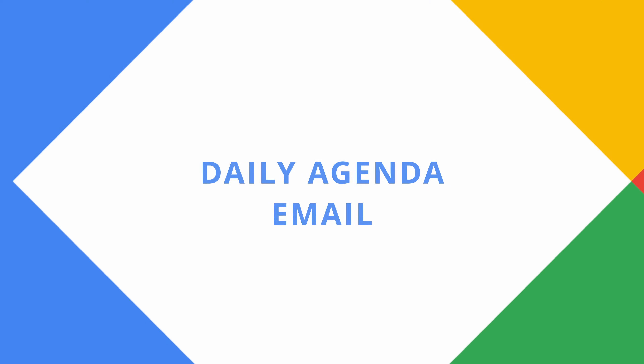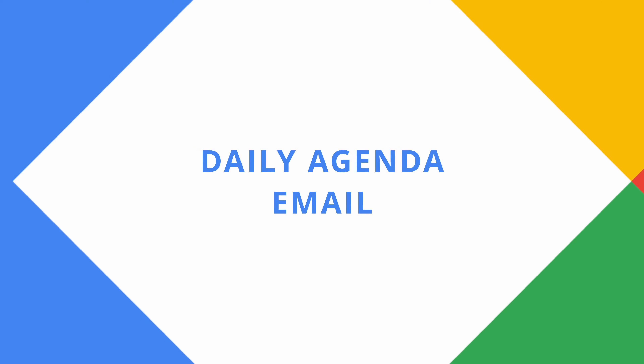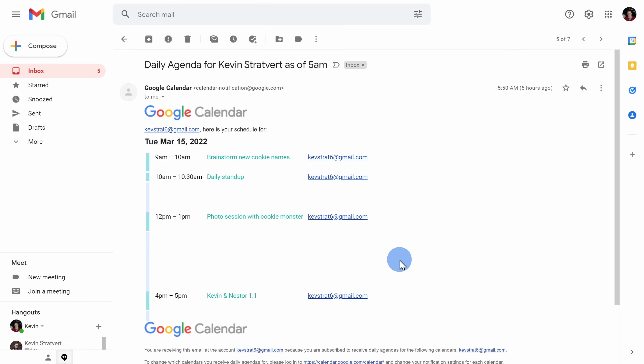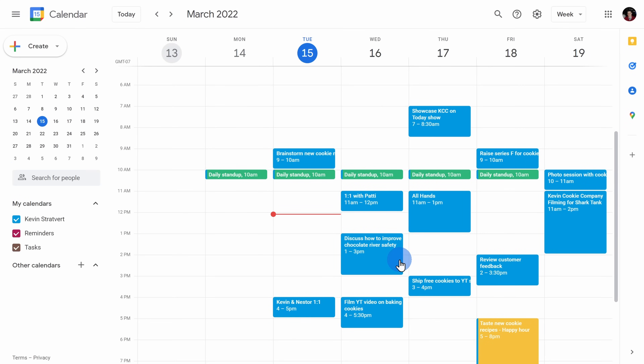Tip number nine, you can receive a daily agenda email. I'm really good about checking my email every morning, but I don't always check my calendar — this way I simply get my calendar in my email. To set this up, on the left-hand side hover over the calendar where you would like to activate this.